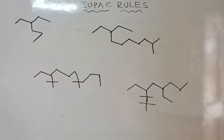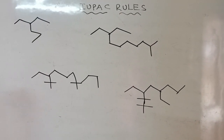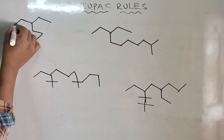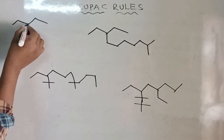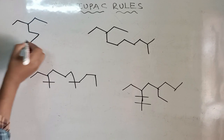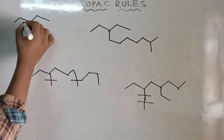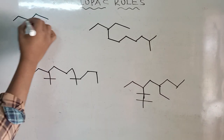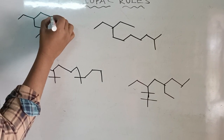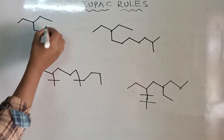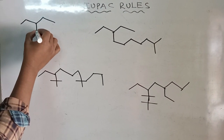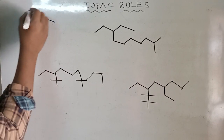In the next example, select the chain in a continuous manner. One direction gives 1, 2, 3, 4, 5, 6. If you move in another direction, you get 1, 2, 3, 4, 5. The maximum count gives 1, 2, 3, 4, 5, 6.